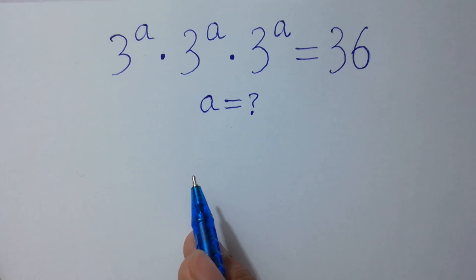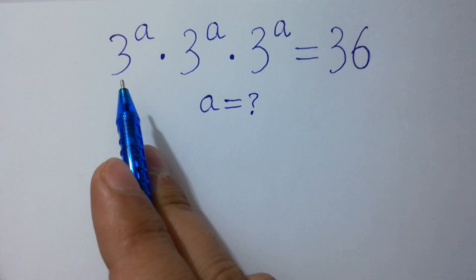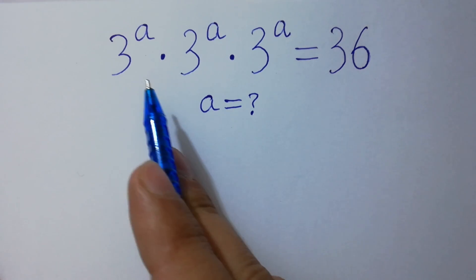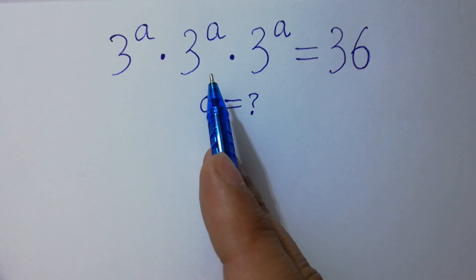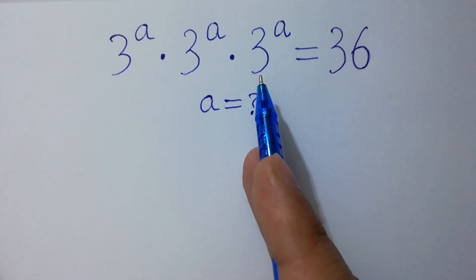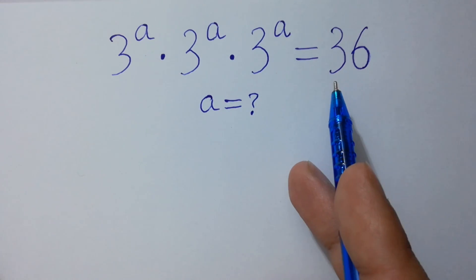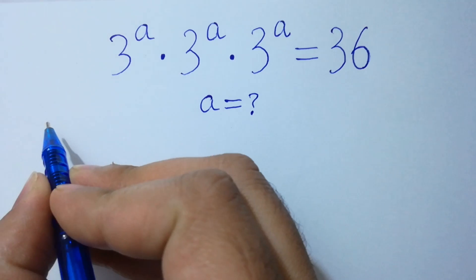Hello friends. Find the value of a if 3 to the power a times 3 to the power a times 3 to the power a equals 36. Let's have a solution.